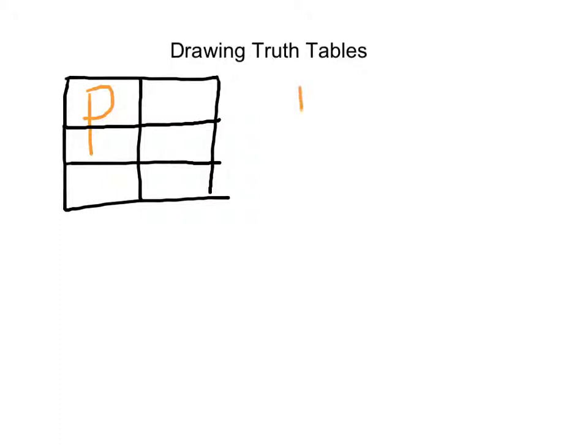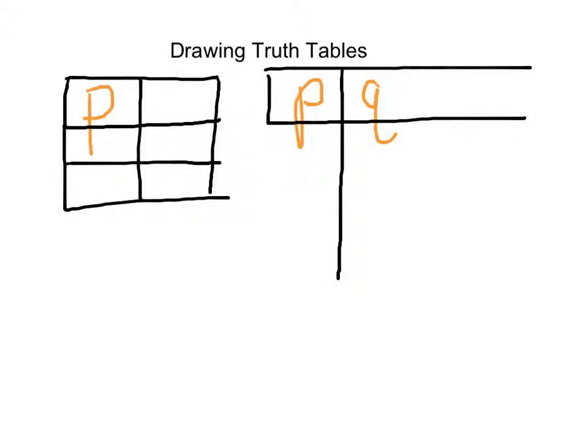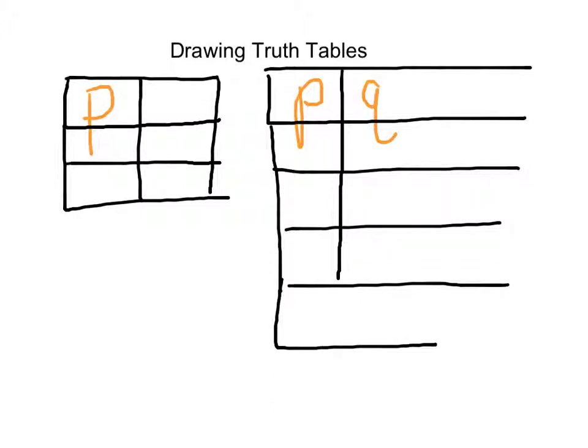If you have two statements, let's call them statement P and statement Q, then you will have the row with headings. There might be several columns like that. And below each heading, you're going to have four rows for truth values.